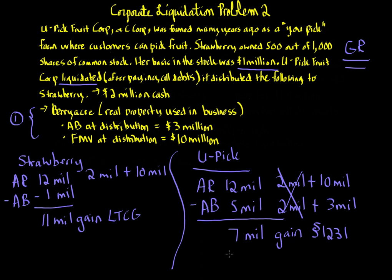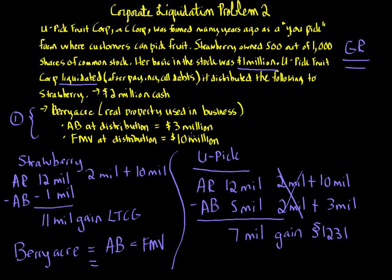There is one other issue: what basis does Strawberry take in the assets? For cash, it's always the face value. For Berry Acre, under section 334, the basis Strawberry takes is always equal to fair market value. Therefore, this amount equals $10 million. That completes all the consequences of variation one.